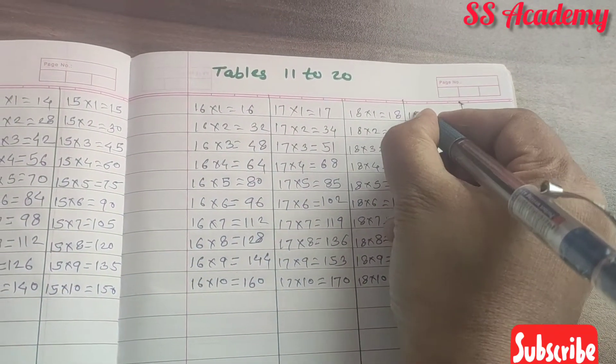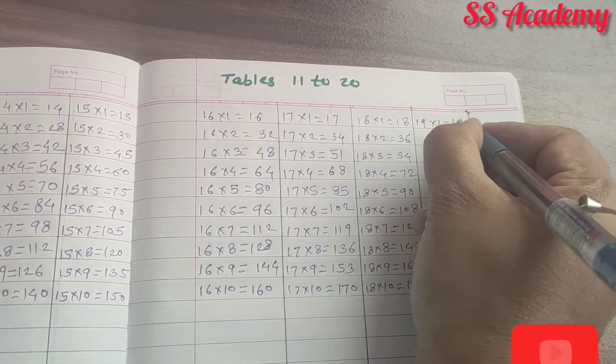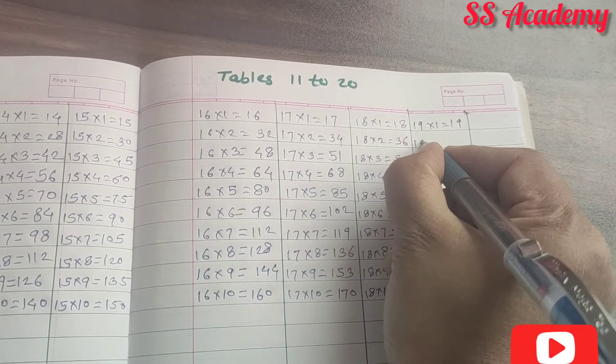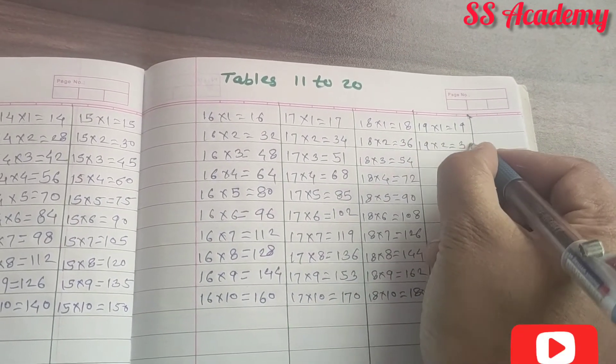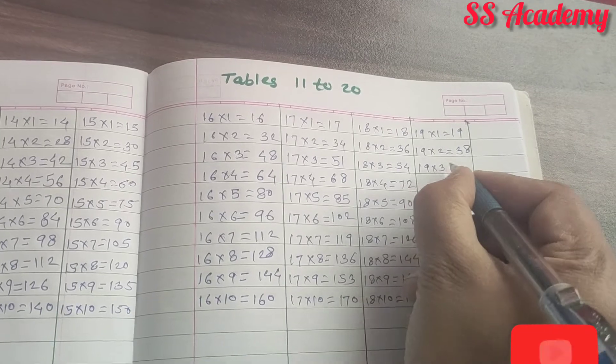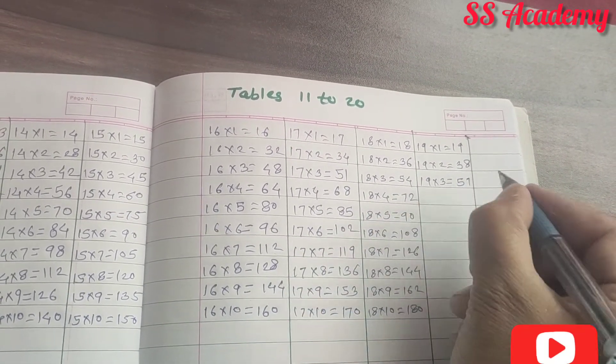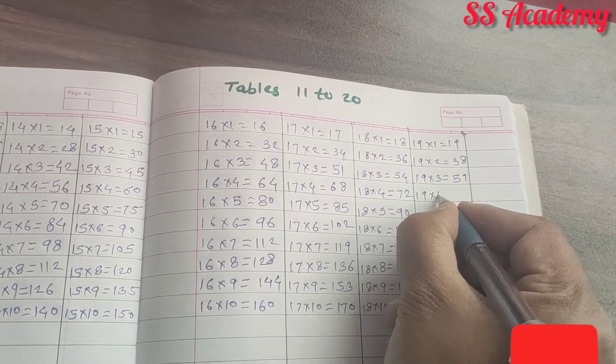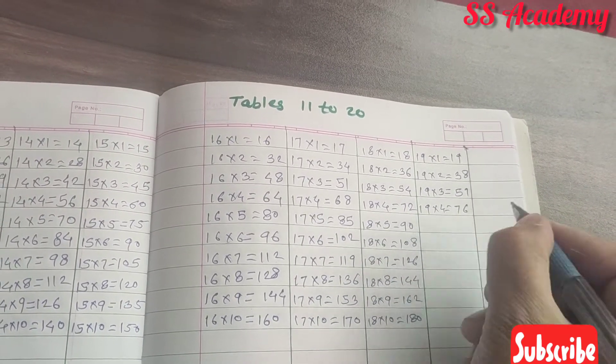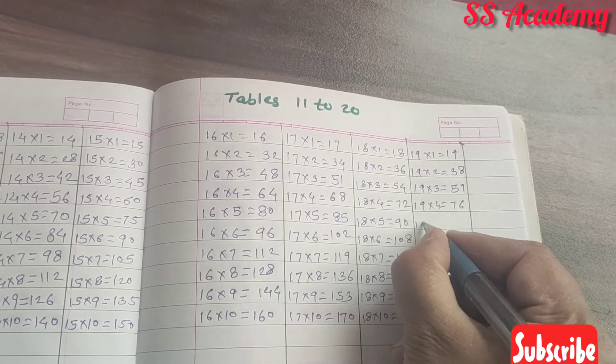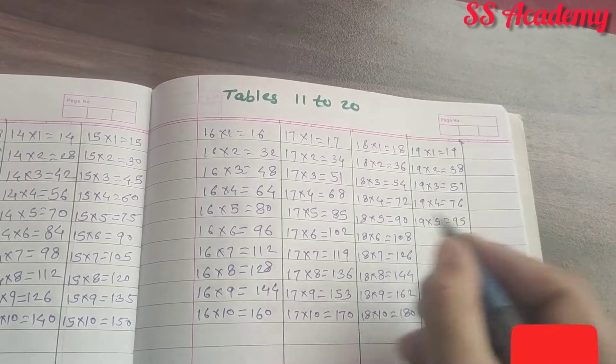Next 19. 19 times 1 is 19. 19 times 2 is 38. 19 times 3 is 57. 19 times 4 is 76. 19 times 5 is 95.